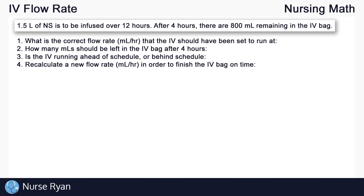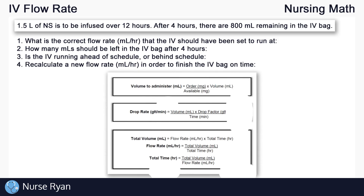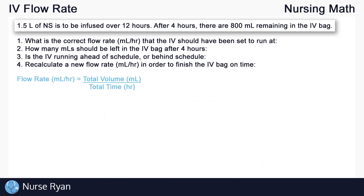Starting with question number 1, what is the correct flow rate that the IV should have been set at? For this question, we'll take a quick look at our drug calculation formulas worksheet. The question is looking for flow rate in mils per hour, and we can see that we have a formula to calculate that exactly. Let's write that down: flow rate in mils per hour is equal to volume in mils divided by time in hours.